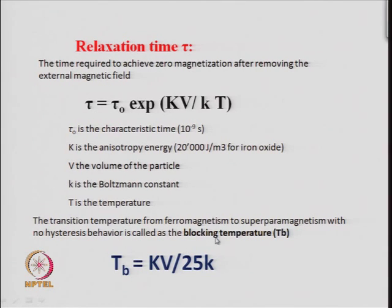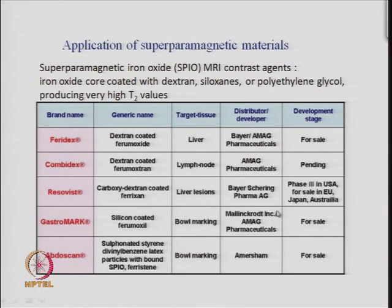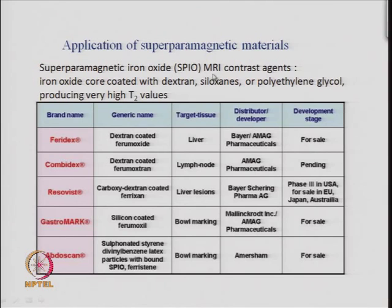The blocking temperature is the transition temperature where a material that should become ferromagnetic instead becomes super paramagnetic as it cools. This is the key definition: the temperature at which super paramagnetic behavior appears from what would otherwise be ferromagnetic behavior. The blocking temperature depends on the material and its particle size.